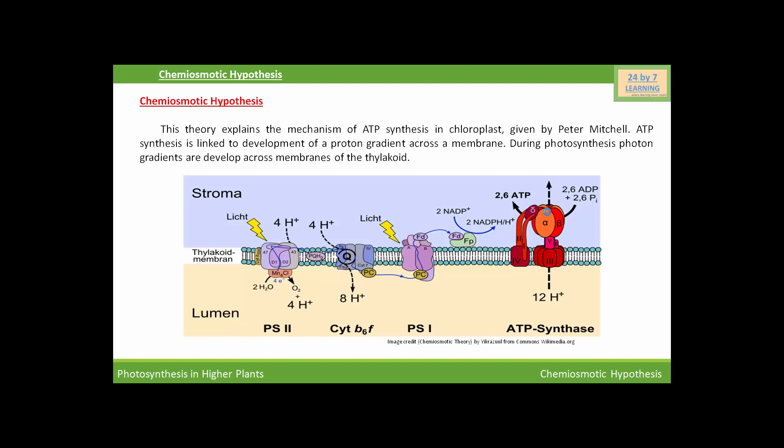The breakdown of the gradient means there is a movement of hydrogen ions down the concentration gradient, from higher concentration towards lower concentration. This breakdown of the gradient provides enough energy to cause conformational changes in the F1 particle of the ATPase enzyme, which makes the enzyme synthesize several molecules of energy-packed ATP. So the proton motive force is used to generate ATP from ADP and Pi.